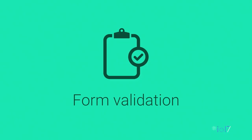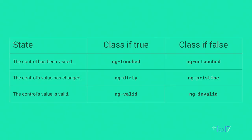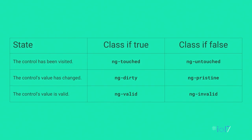Another thing we really care about is form validation. Web components plus Angular forms is a magical experience — the moment you've wired up these control value accessors, everything you expect from form validation just starts working. If I take the dash-listbox and add a required attribute, it becomes required as part of the standard form controls. Angular forms gives you CSS classes indicating form state: ng-touched, ng-untouched, ng-dirty, and valid/invalid states — all wired up automatically using the same validators you use with standard HTML elements.